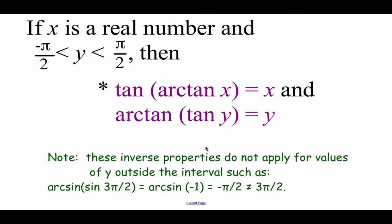Now we do need to make sure that our y values fall within those intervals. Like on this example, if we were talking about a sine of 3π/2 — well, the sine of 3π/2 is negative 1, but if we then did the arc sine of that, we would get back the answer negative π/2. Because those output y values have to be between negative π/2 and positive π/2, and negative π/2 isn't technically the same thing as 3π/2. So we do need to pay attention to those interval restrictions on those x and y values.